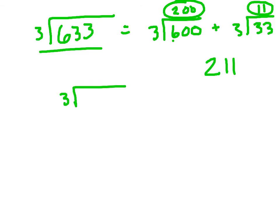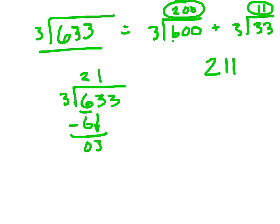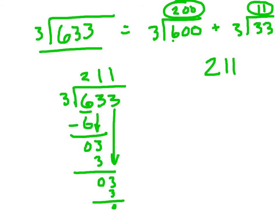Let's just check that quickly. 3 goes into 6 two times; 2 times 3 is 6. Subtract: 0, that's less than 3. Bring down. 3 goes into 3 one time; 1 times 3 is 3. Subtract: 0. Bring that down. 3 goes into 3 one time; nothing left. 211 equals 211.